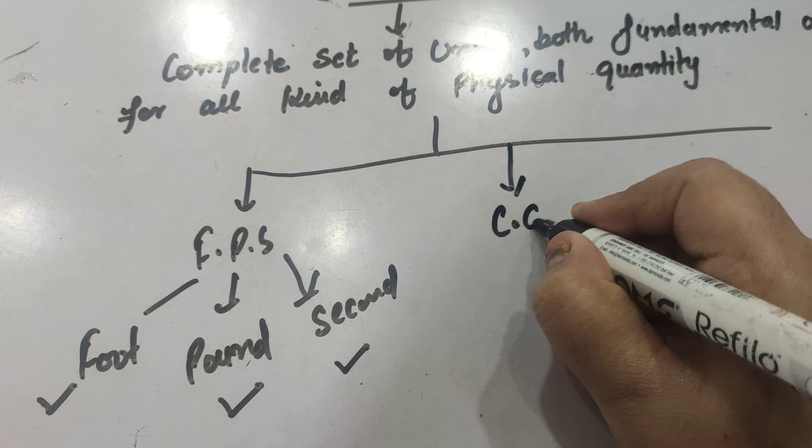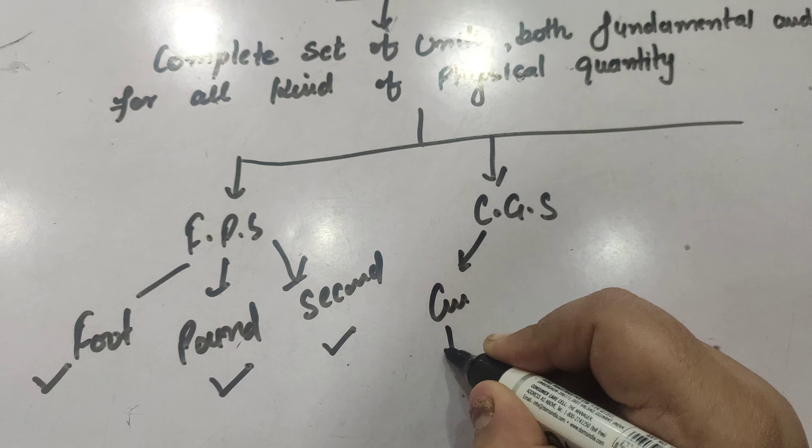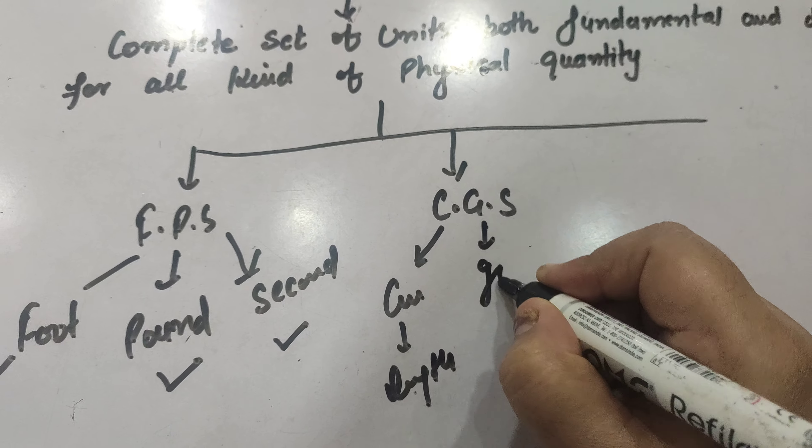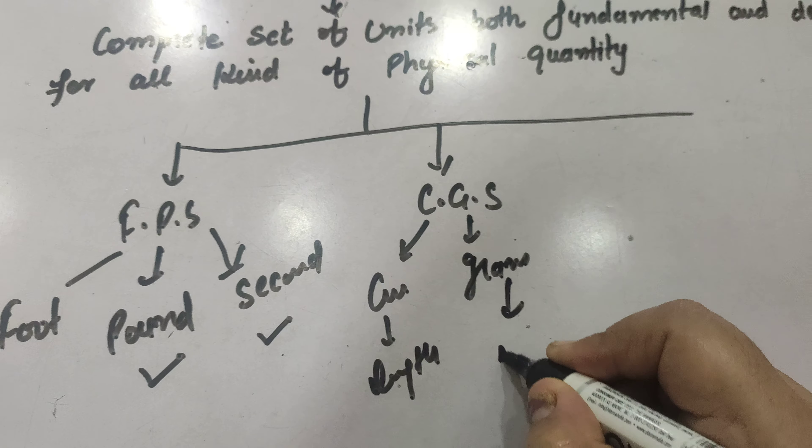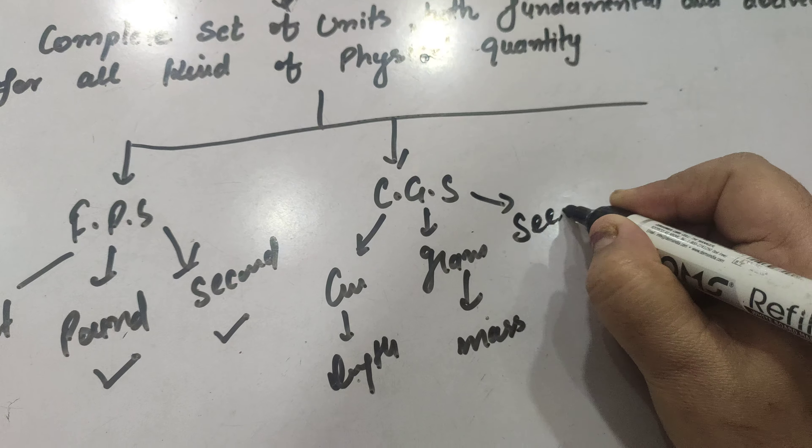Second system is CGS: C is the centimeter for length, G is gram for mass, and S is second for time.